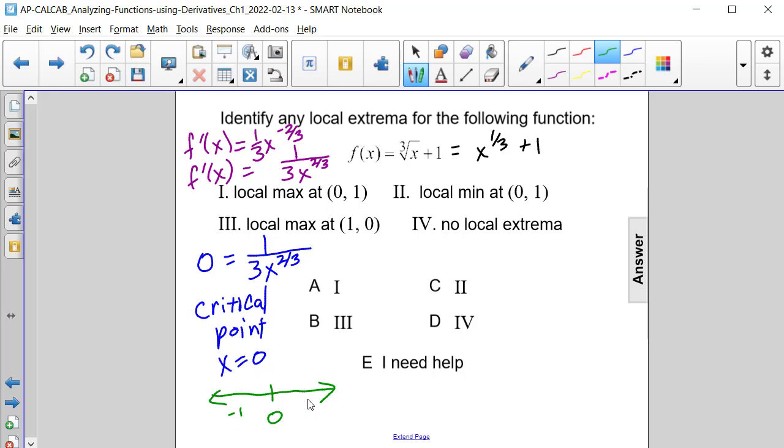I think negative 1 and positive 1 are the easiest values to substitute in there. So if we substitute negative 1 in there, well the cubed root of negative 1 is negative 1, and negative 1 squared is positive 1. So we would have 1/3rd. That would be a positive value.